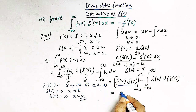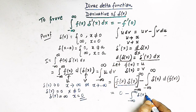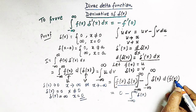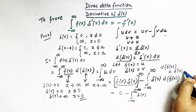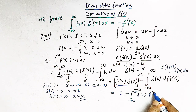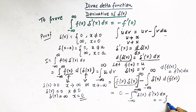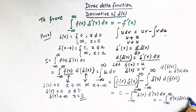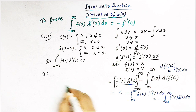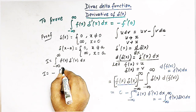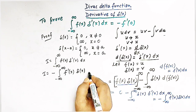We are left with 0 minus the integral from minus infinity to infinity of delta(x) times d of f(x). Since d of f(x) equals f prime of x dx, we can write this as the negative of the integral from minus infinity to infinity of f prime of x times delta(x) dx.